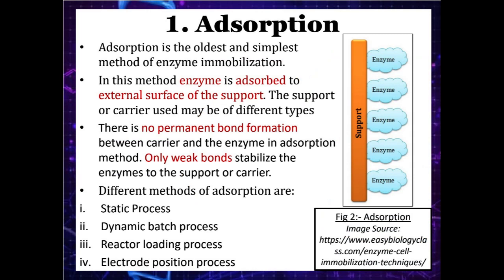Starting with the physical methods for immobilization, the first method is adsorption. Adsorption is the oldest, easiest, and fastest method for enzyme immobilization. In this method, the enzyme is adsorbed to the external surface of the support. It is a reversible process where adsorption is dependent on experimental variables such as pH, nature of solvent, and ionic strength. There is no permanent bond formation between the carrier and the enzyme in the adsorption method. Only weak bonds stabilize the enzyme to the support, such as ionic interactions, hydrogen bonds, and van der Waals forces.